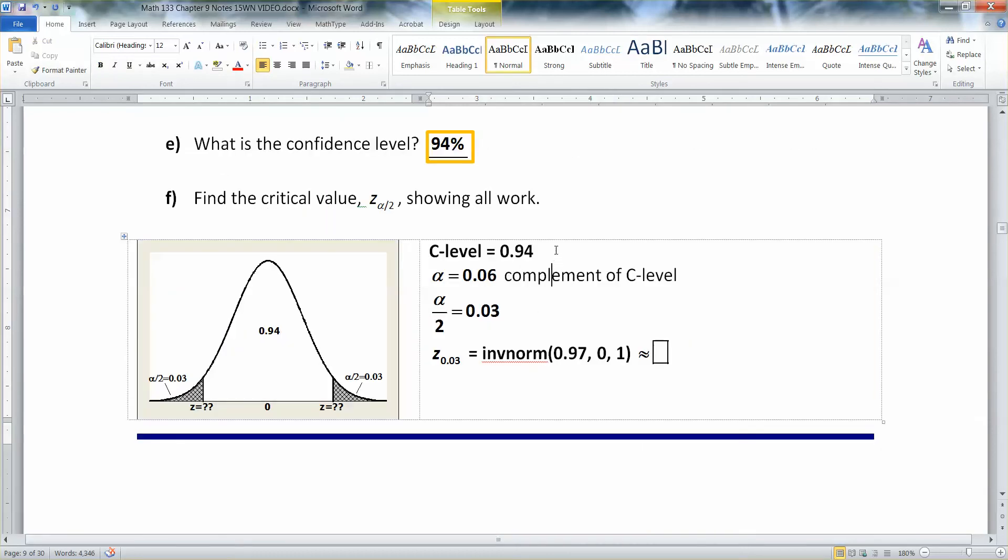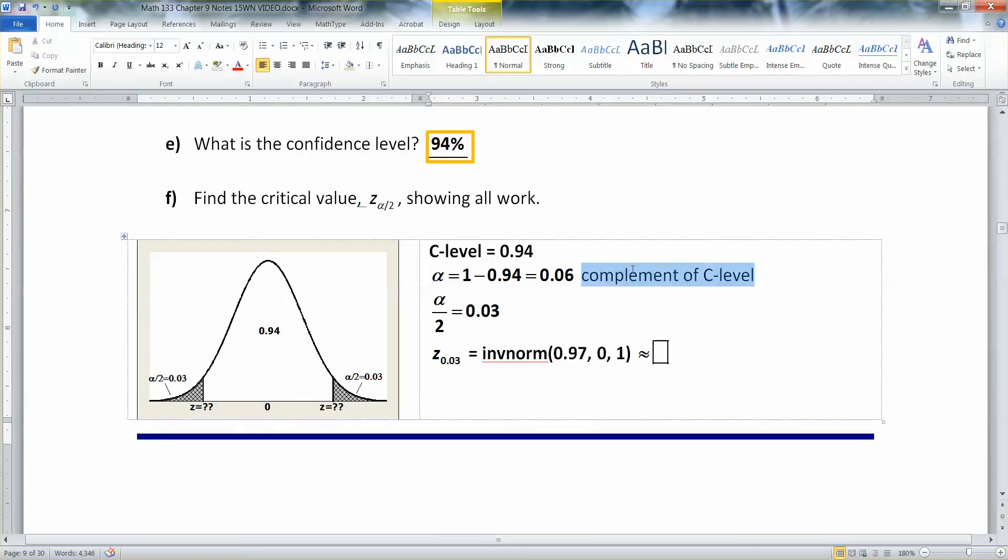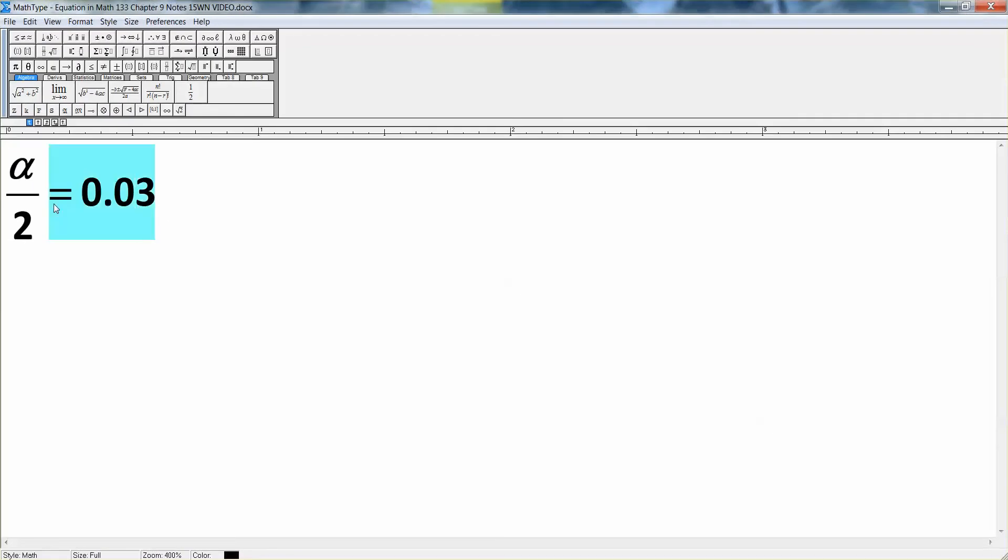So I typed it up. The confidence level was 0.94. That means the alpha is 0.06. Let me show you where that comes from. Alpha is the complement. So it's 1 minus 0.94, which is 0.06. That's the area in both tails. And then what you do is you cut it in half to get alpha over 2, because that's what it is in the formula, Z alpha over 2. So you have to take 0.06 and you divide it in 2, which gets you 0.03. That's the area in one tail, or in each tail.